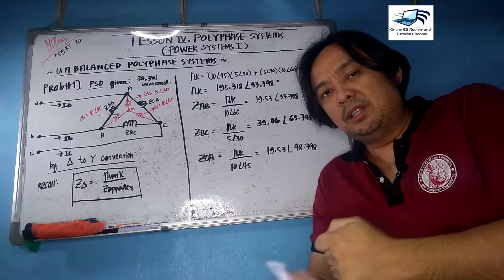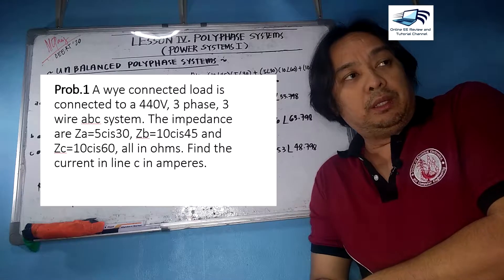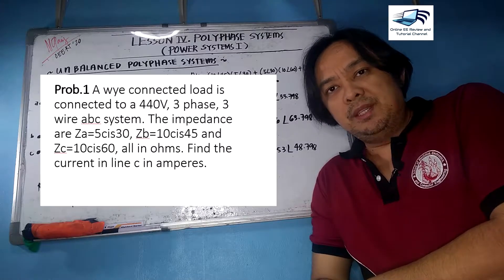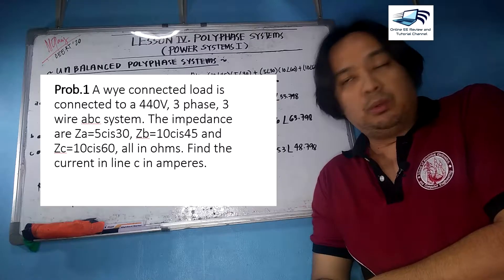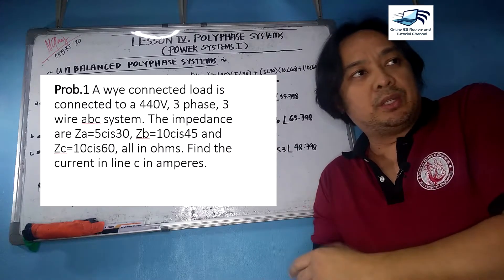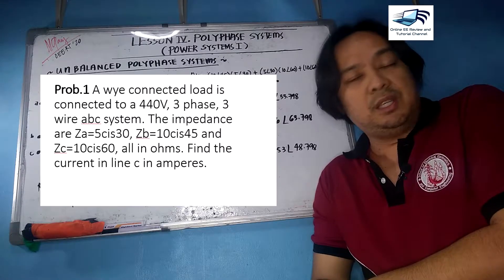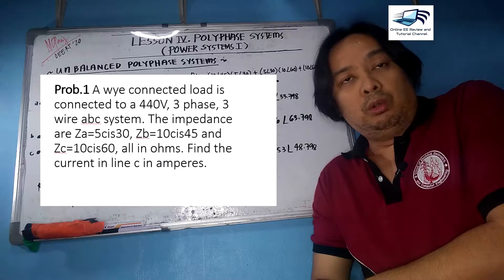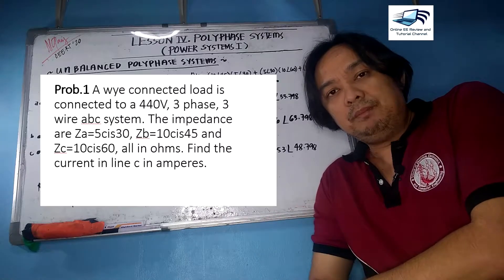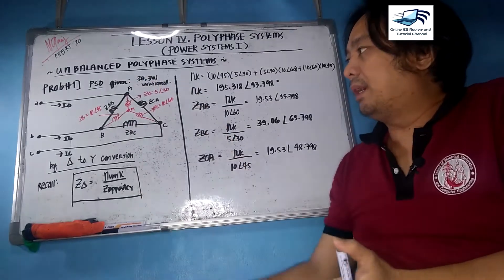Problem number one: a Y-connected load is connected to a 440-volt three-phase three-wire ABC system. The impedances are: ZA = 5∠30°, ZB = 10∠45°, and ZC = 10∠60°, all in ohms respectively. Find the current in line C in amperes.